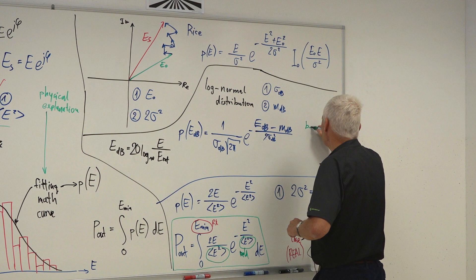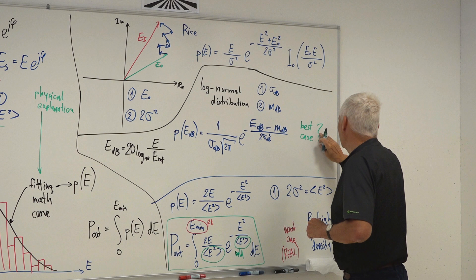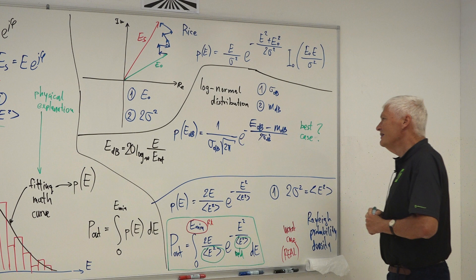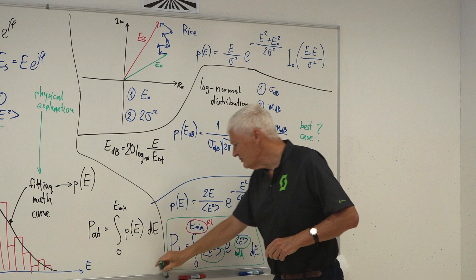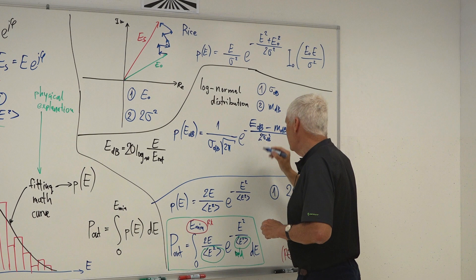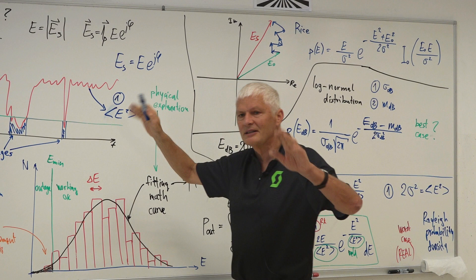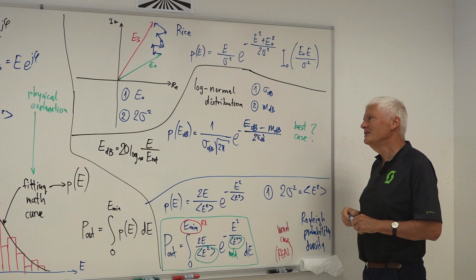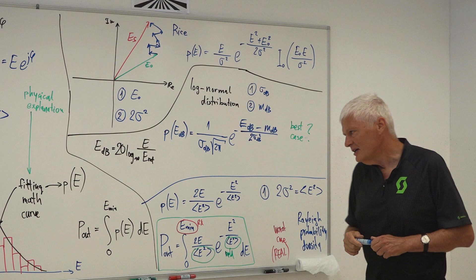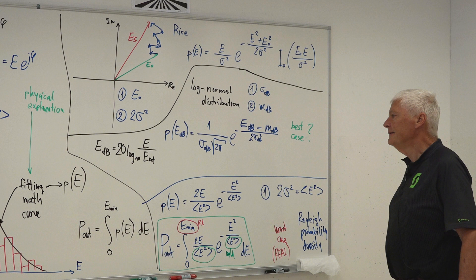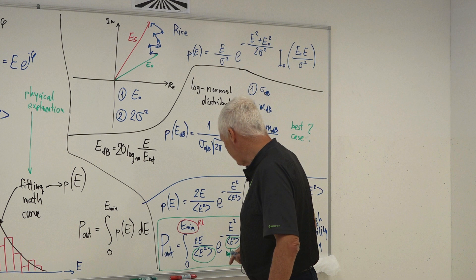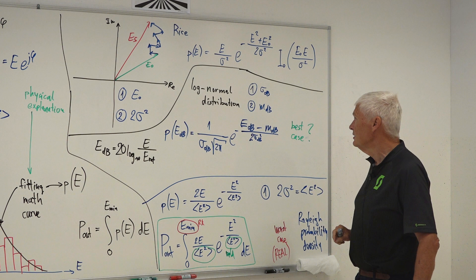Let's make it clear: the log-normal distribution is usually the best case. The real link is going to drop out more frequently than the log-normal distribution predicts. If you want to fool your customer, you do measurements in fine weather — no clouds, no rain — and you get very fine results with the log-normal distribution. Log-normal is usually not realistic; it gives far better results than other distributions. The Rayleigh distribution is usually the worst case, so if we're planning for the worst case, we must use the Rayleigh distribution.